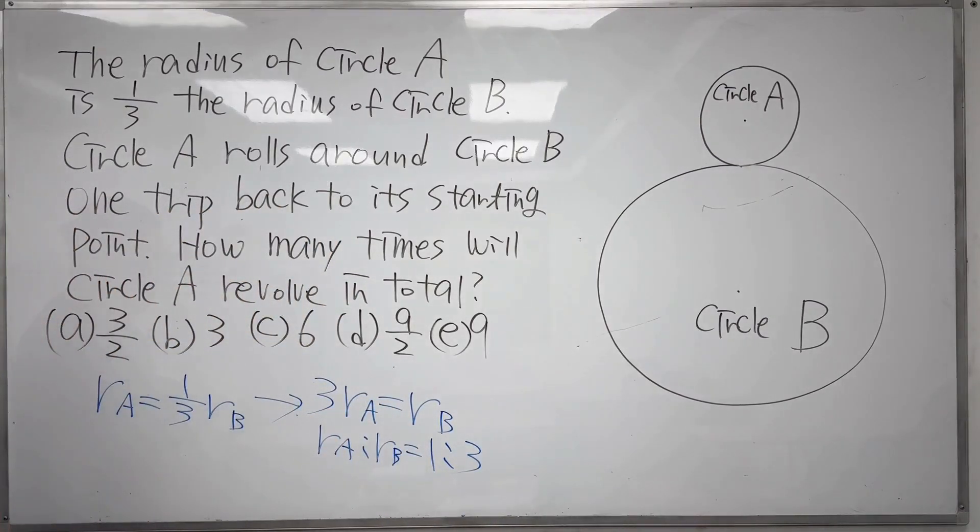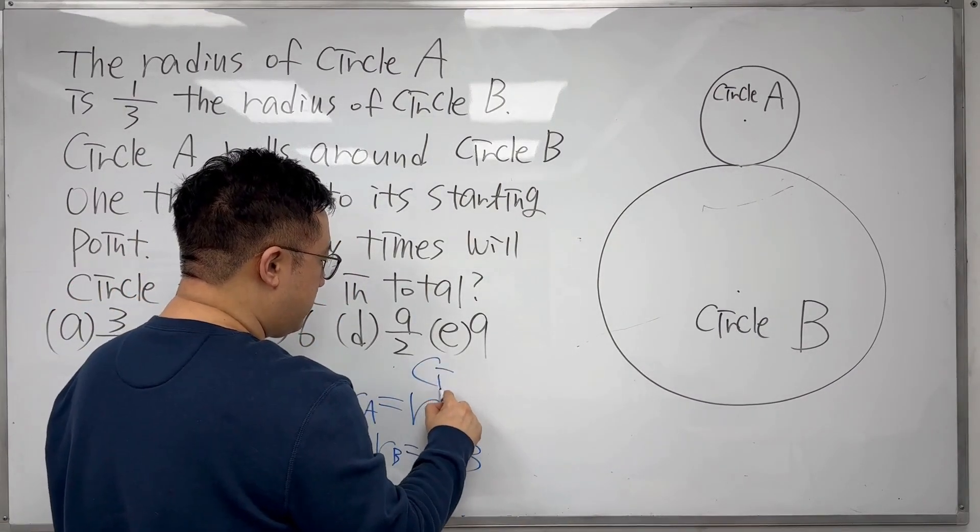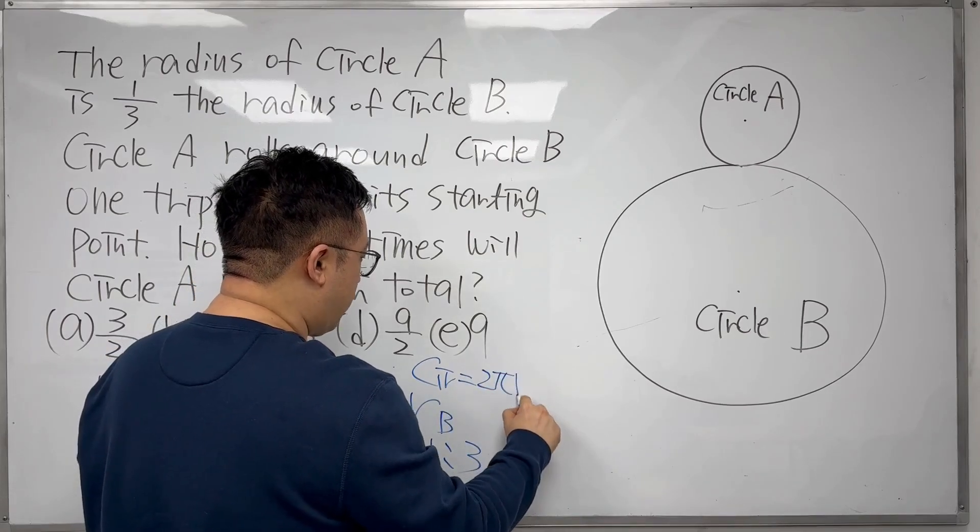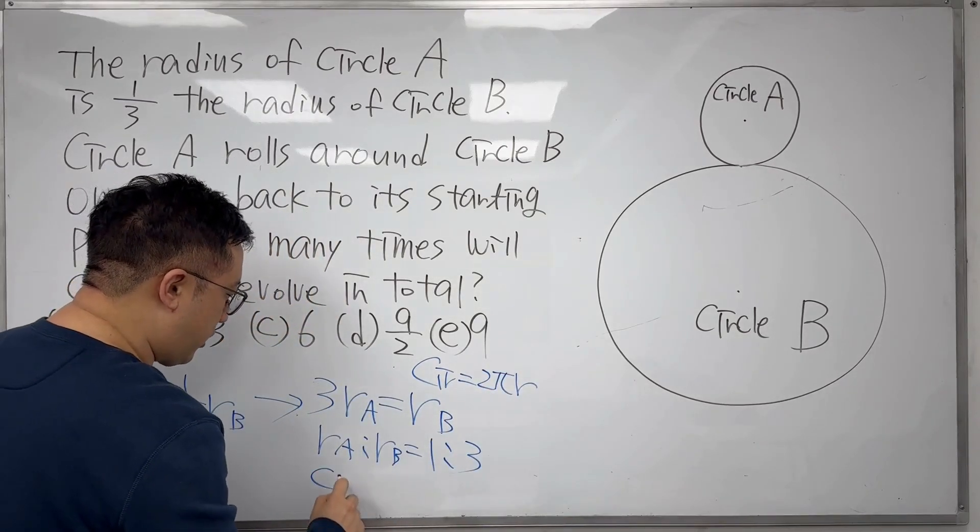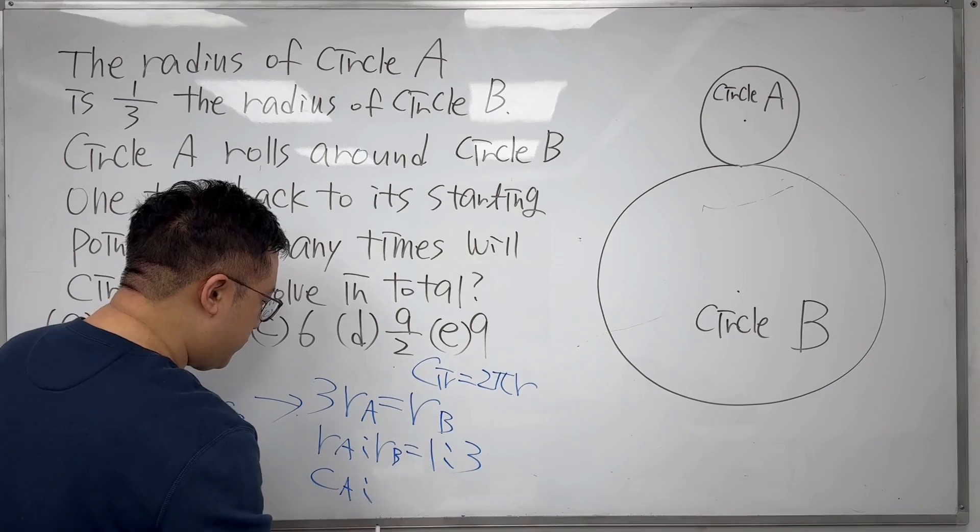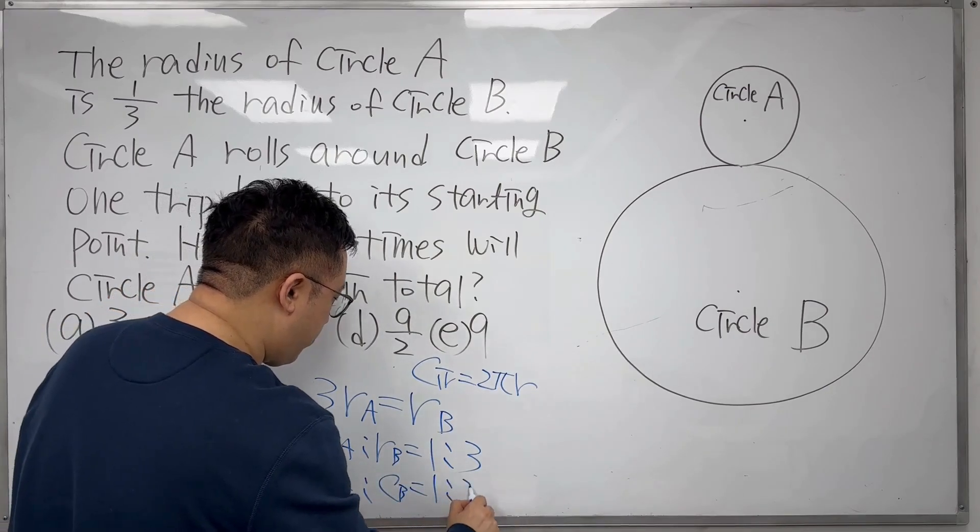We already know the formula for the circumference, right? The circumference is 2πR. So that's why the circumference of circle A to the circumference of circle B is also 1 to 3.